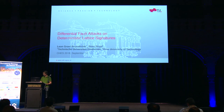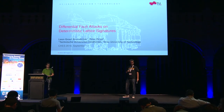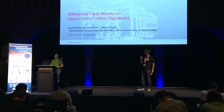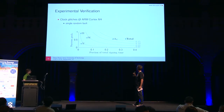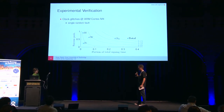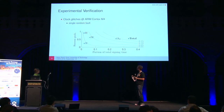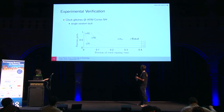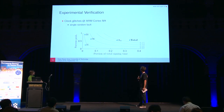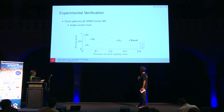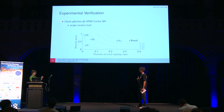During Q&A, a question was raised about targeting: if you blindly shoot a fault without targeting anything, about 30% of the runtime is susceptible. But you can be more targeted — for instance, expansion of the public key always occurs near the beginning, so targeting that window gives roughly a one in two (or slightly above) success probability.